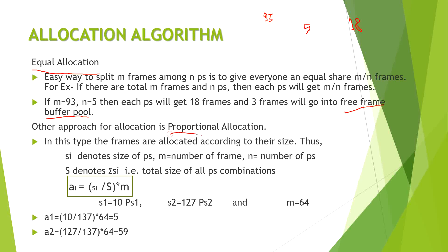In proportional allocation, distribution depends entirely on the size of the process. In equal allocation, process size is not considered, but in proportional allocation it matters. First, we check the size of each process and sum all sizes into capital S (Σsi). M is the total number of frames — in this case 64. Let's say there are two processes with sizes 10 and 127, giving a total size S = 137.